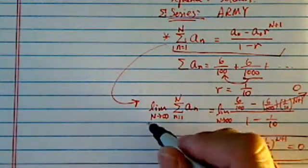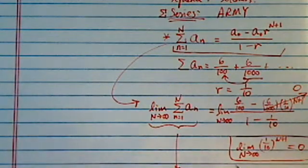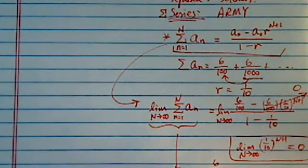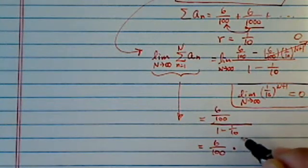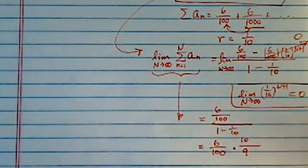Okay, now having derived that, then we have this whole sequence sum is equal to 6 over 100 divided by 1 minus 1 over 10. So that's equal to 6 over 100 times, 10 goes on top, 9 goes on the bottom. So we have basically 6 over 90.